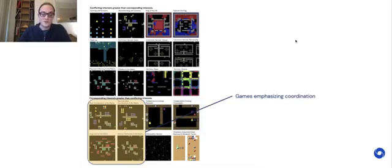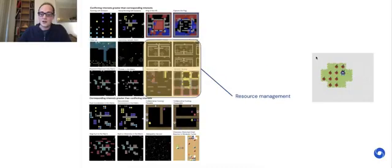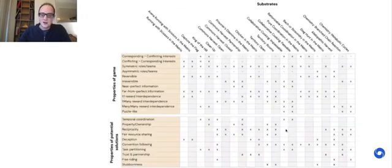These four are games that emphasize coordination issues. Coordination is very difficult there. These are more social dilemmas that feel classically social dilemma-like with some tragedy of the commons elements. Some are more public goods-like. These have more of a resource management flavor to them. Trust appears in some of them. There's also some that have a war of attrition concept to them.